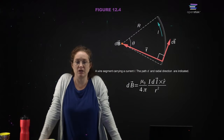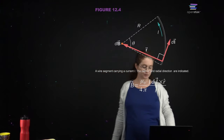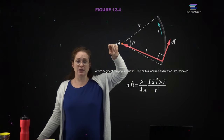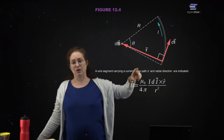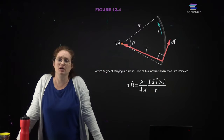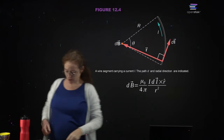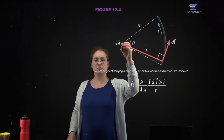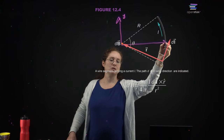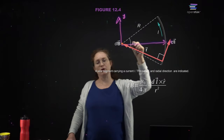A wire segment carrying a current I — the path D and the radial, so the wire segment is radial. We're talking about a circular segment of wire, and we want to integrate around this point. What is the magnetic field around that point? So the R-hat is in that direction. We are going to use a coordinate system where this is x, that's y, and we're going to use polar coordinates.